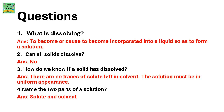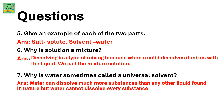Name the two parts of a solution: solute and solvent. Give an example of each of the two parts: salt is the solute and water is the solvent. Why is a solution a mixture? Dissolving is a type of mixing because when a solid dissolves, it mixes with the liquid. We call this mixture a solution.